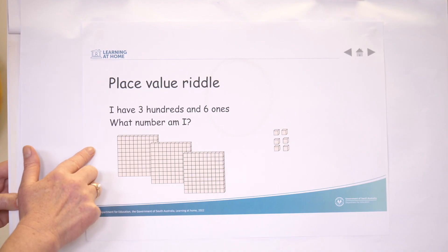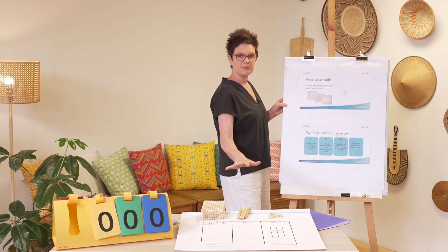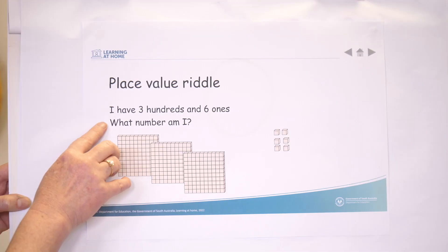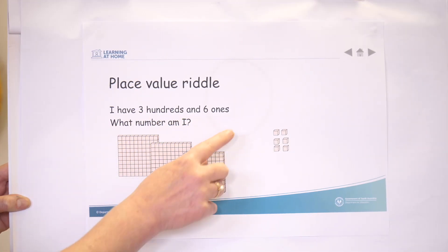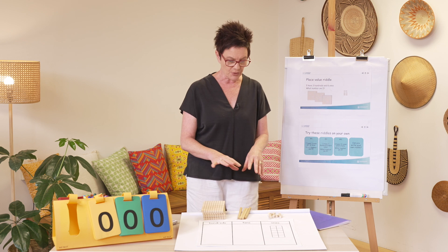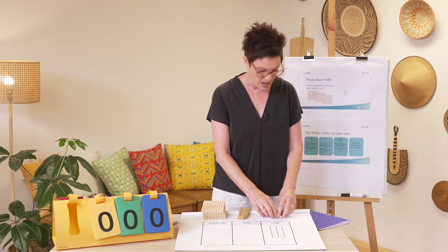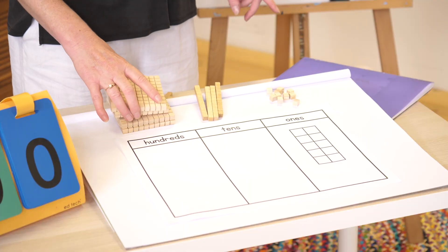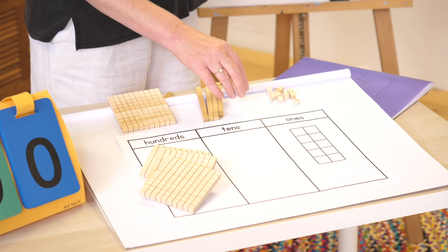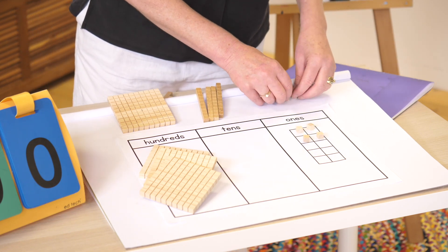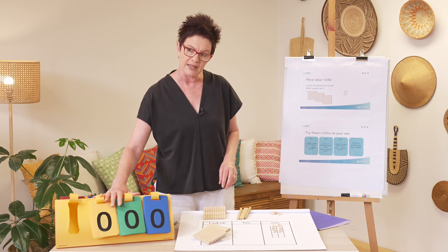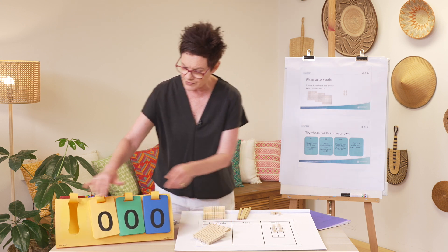We'll do this one together and then I'd like you to try some on your own. I'm going to use my place value mat — I'd like you to do the same shortly. The riddle is: I have three hundreds and six ones — what number am I? I'm going to go to my place value mat. I have three hundreds — one, two, three — and I have six ones.